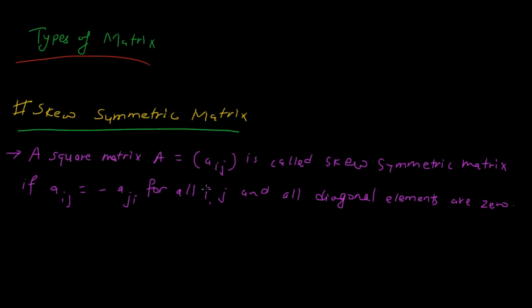Welcome. In this lesson we are going to discuss the concept of skew symmetric matrix. In the previous lecture we discussed symmetric matrix, but in this case we are going to discuss skew symmetric matrix. The definition is: a square matrix A is called skew symmetric if a_ij equals minus a_ji for all i and j, and all the diagonal elements are zero.